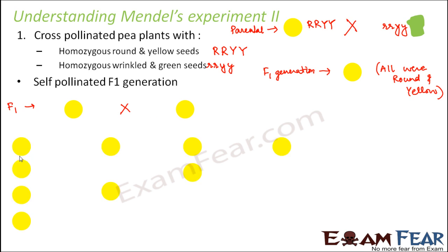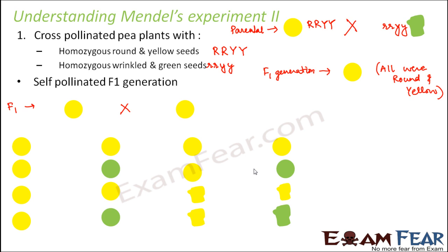In the F2 generation it was found that 9 seeds were round and yellow, 3 seeds were round but green, 3 seeds were yellow but wrinkled, and just 1 seed was green and wrinkled. This result was quite different from what was observed in the monohybrid cross, where only one trait was being considered.